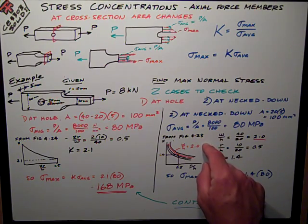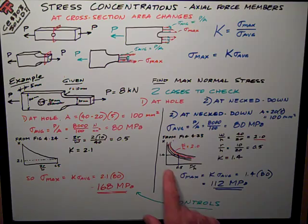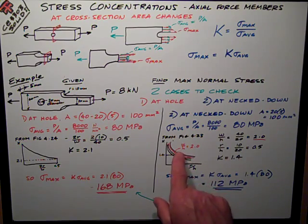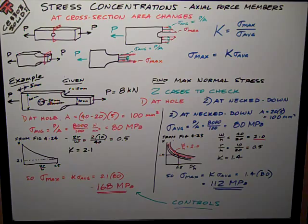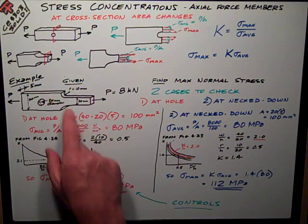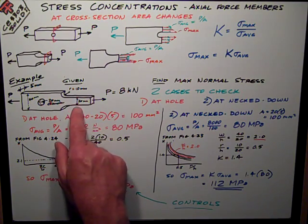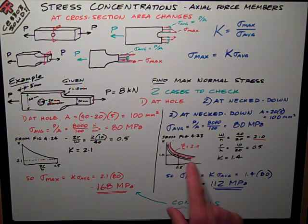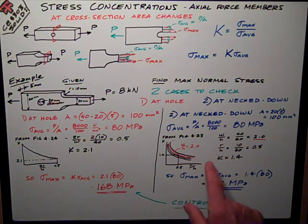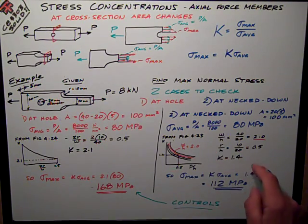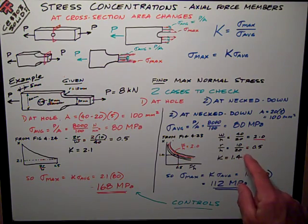Then there's a chart in the book, 423, that shows K factor as it relates to, there's several curves, I think six or seven curves that are based on different ratios of W over H. W is the wide area before it necks down, H is the height of the neck down section, so in this case it's 40 over 20, 2.0. That tells me what curve to look at. I've drawn it in red just to show it a little bit more clearly. Then on the horizontal, I have this ratio of the radius of the fillet to the height of the neck down part, that is 10 over 20, 0.5.